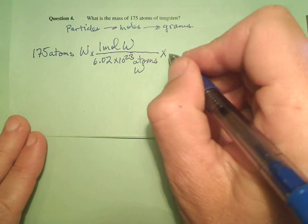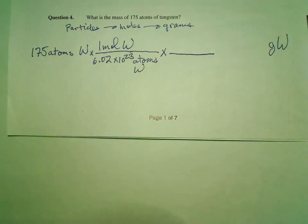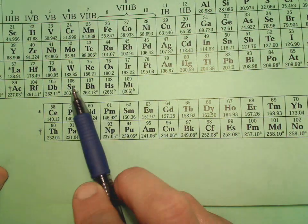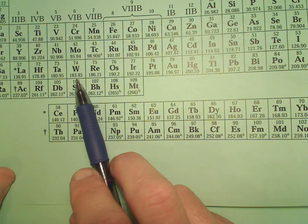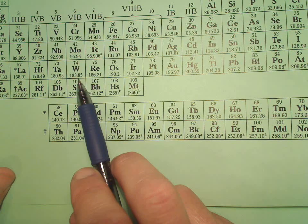Now, let's get out of our moles and into mass. So once again, moles to mass need our handy-dandy periodic table. And there's W, 183.85 grams per mole.